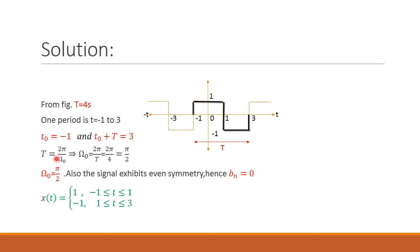Capital T (period) = 2π / ω₀. From this, we can calculate ω₀ = π/2. Also, we can see this is an even-symmetric signal, so we can directly substitute bₙ = 0 — no need to calculate bₙ; we substitute it as 0.